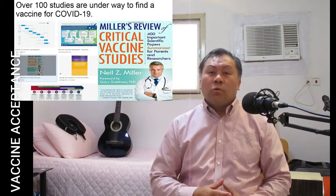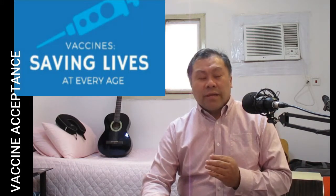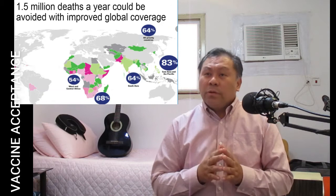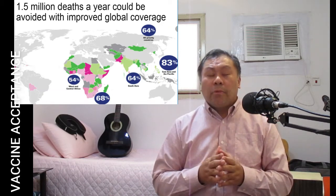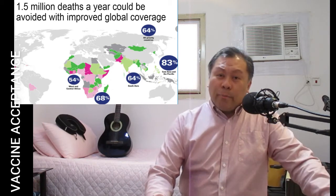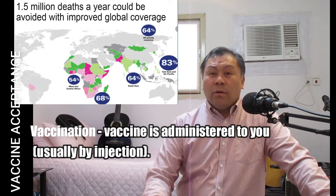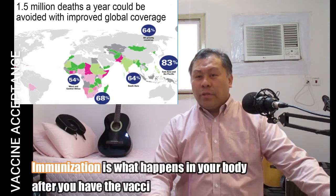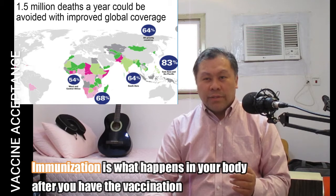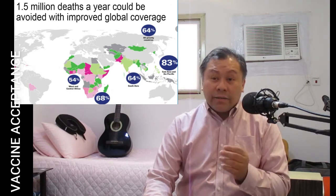Vaccination is one of the world's most successful health interventions, saving as many as 3 million lives every year. Vaccines save lives at every age — about 1.5 million deaths a year could be avoided with improved global coverage. A successful routine immunization system requires the synchronization of multiple program components. Vaccination is when a vaccine is administered to you, usually by injection. Immunization is what happens in your body after vaccination — the vaccine stimulates your immune system so it can recognize the disease and protect you from future infection.